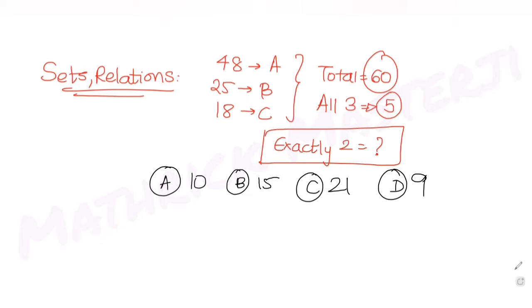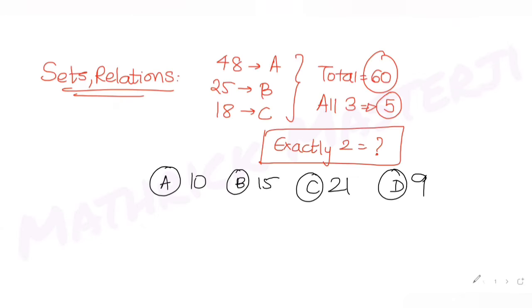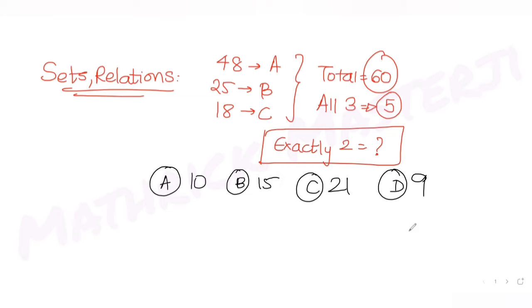We have been given three events occurring. If I draw three circles for the three events, I have event A, event B, and event C. We have also been given the number of medals in each of these events: 48 medals in event A, 25 in event B, and 18 medals in event C.